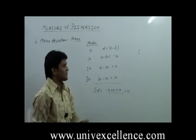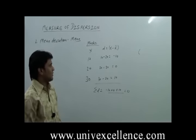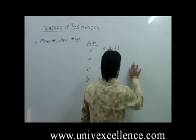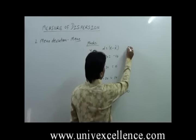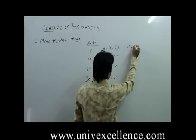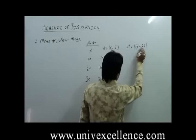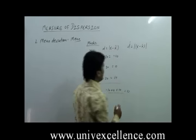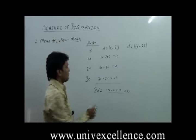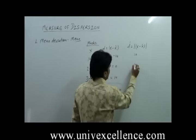So we actually find out the absolute value of deviation. What is the absolute value of deviation? That is |X minus X-bar|. That means we ignore the negative sign of the deviation, so minus 10 becomes plus 10.